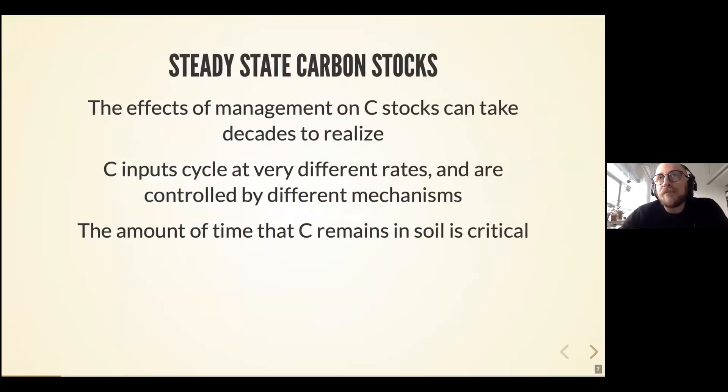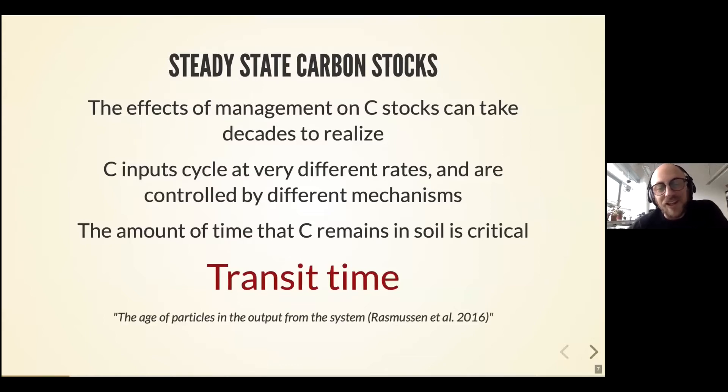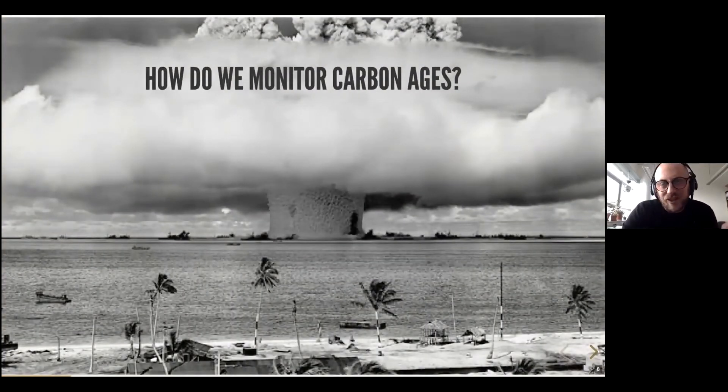These carbon inputs to a system can cycle at very different rates depending on soil characteristics, soil moisture, nutrient availability. But ultimately, what I'm most interested in is how long the carbon is actually staying in these systems. This is a term we use in this work: transit time. Transit time describes the age of the particles in the output of the system. You have a mean transit time, so mean age, but also the distribution of ages is quite important. So how do we actually measure the carbon age? We use radiocarbon.